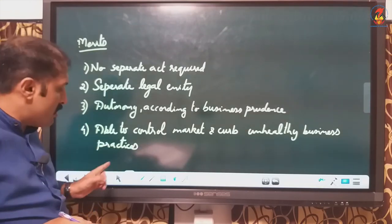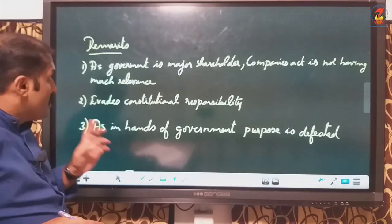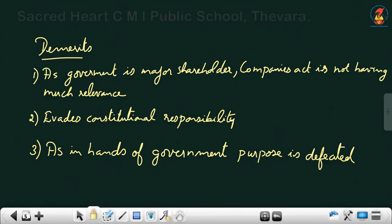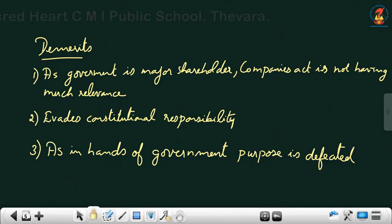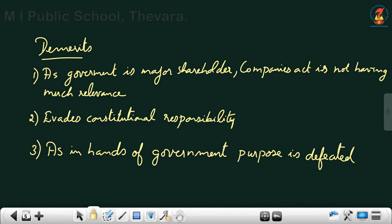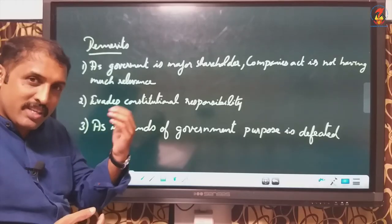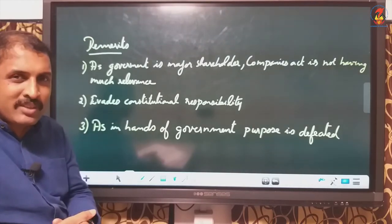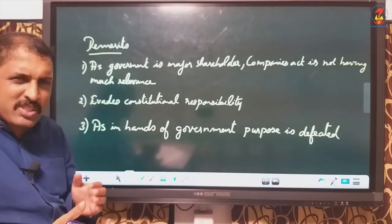Coming on to demerits — as government is the major shareholder, many times the Companies Act does not have much relevance because government acts above the Companies Act, and many times they may not be strictly following the Companies Act, which can be a problem.